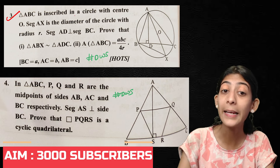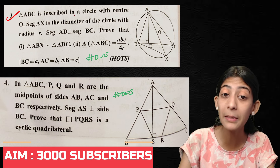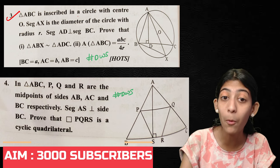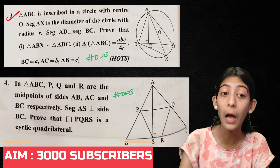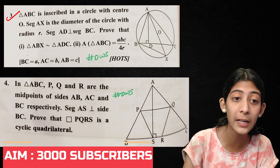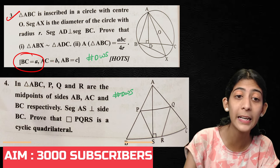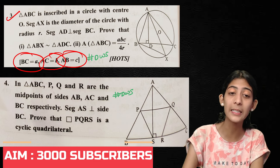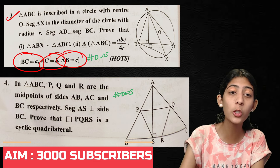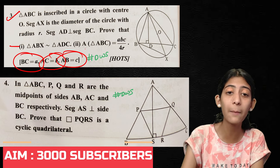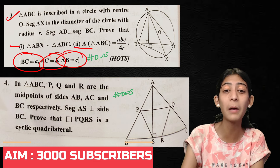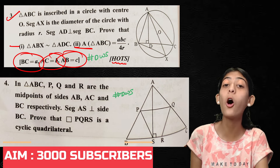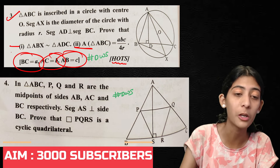Third question — HOTS: Prove that the area of triangle ABC is equal to abc upon 4R. You are given angles BCA, ACB, and ABC. You have to prove two things. This carries 4–5 marks and is a Higher Order Thinking Skills question.